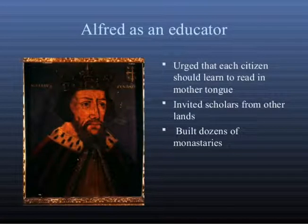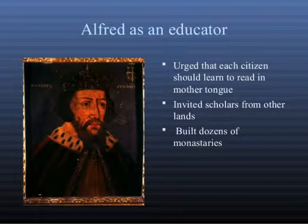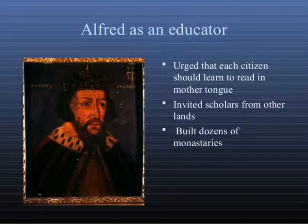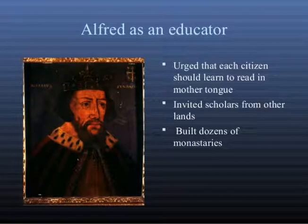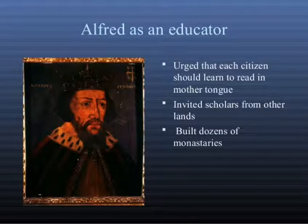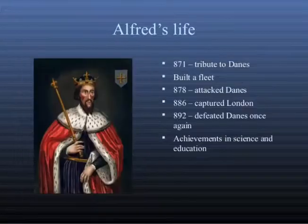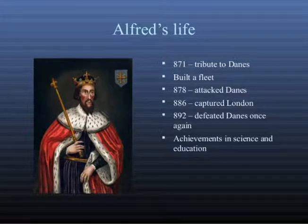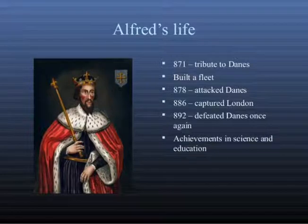Alfred the Great is famous for his victories against the Vikings and is the only English monarch known as 'the Great.' Alfred was born in 849 and served as the King of Wessex, a Saxon kingdom based in the southwest of modern-day England, from 871 to his death on 26 October 899 AD. During this time, he ruled successfully over his Anglo-Saxon kingdom and emerged as a military force, a strong leader, and a promoter of reforms.